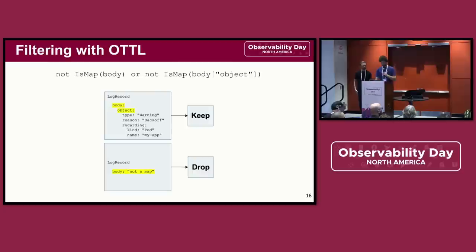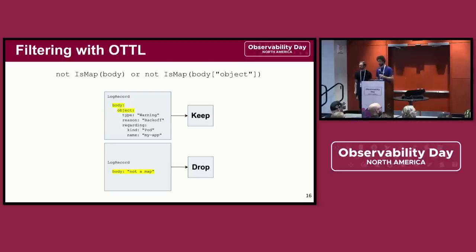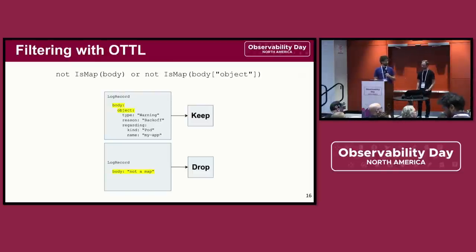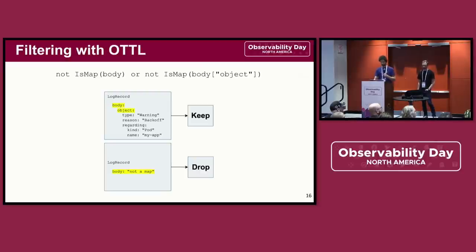Let's take a look at how OTTL enables our goals. We've decided that we can reduce our ingest volume if we drop events that have a reason of 'completed' because we've decided we don't want them, and we intend to use the filter processor to make this decision. This is an OTTL condition. OTTL conditions work with the underlying telemetry, but they never change it. The filter processor can use OTTL conditions to choose which data is dropped — when the condition is met, the processor drops the data.